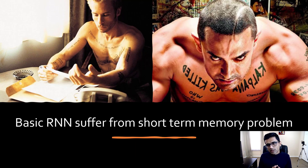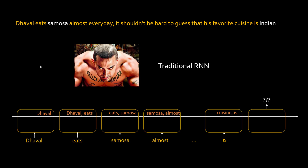The basic RNN suffers from a short-term memory problem. For example, when you are trying to make an autocomplete for a statement like 'the whole eats samosa almost every day,' it shouldn't be hard to guess that the favorite cuisine is Indian. But in order to guess that, you have to remember 'samosa,' and traditional RNN has short-term memory.